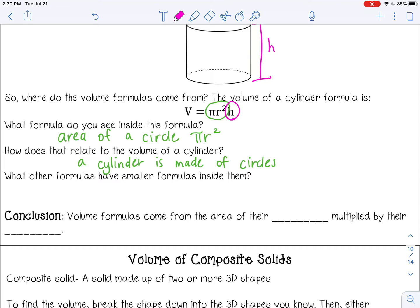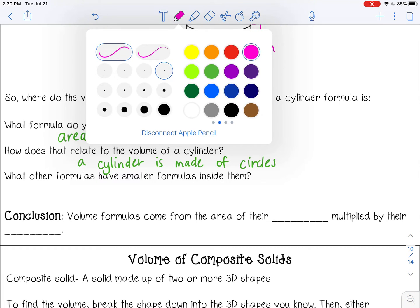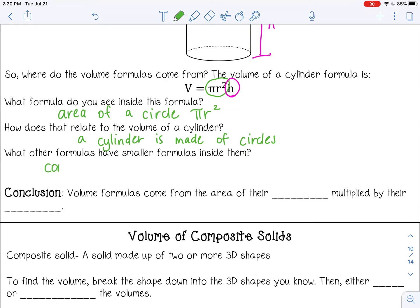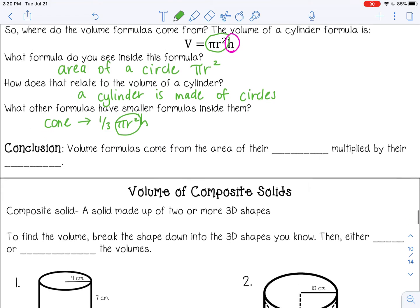So what other formulas have smaller formulas inside of them? So pause the video and see if you can find one. So another one is a cone. One third pi r squared h. And again, it has that pi r squared because a cone is just circles stacked on top of each other, but they're gradually getting smaller. That's where the one third comes from.